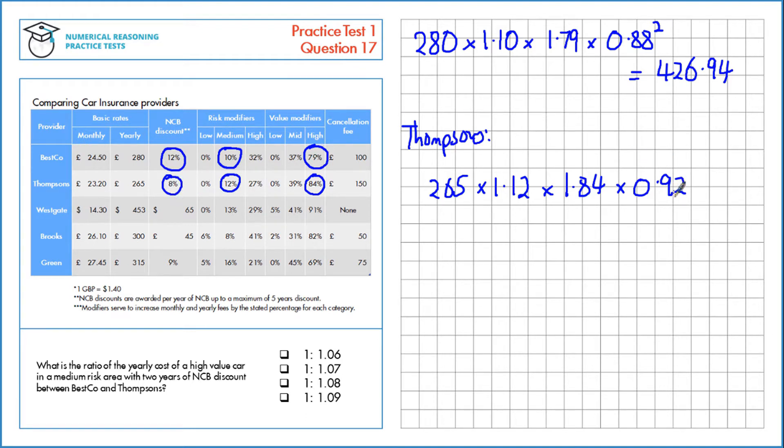100 take away 8 is 92%. Again, that's two years, so we square it, which gives £462.23.